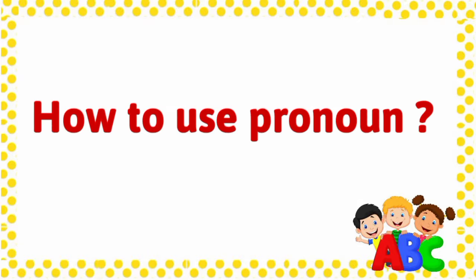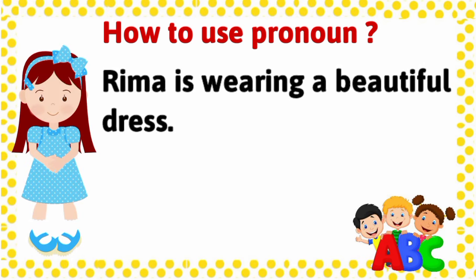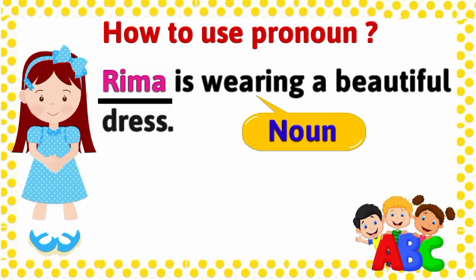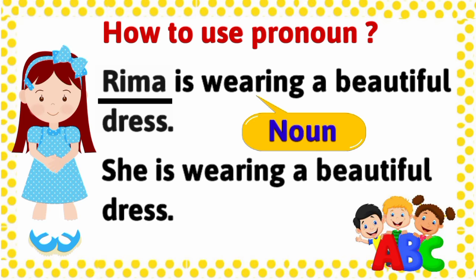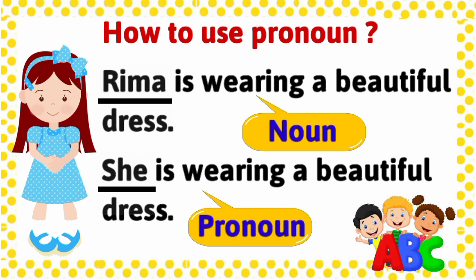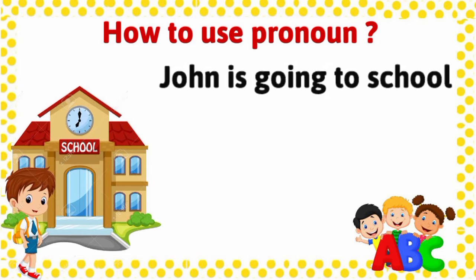Now let's understand this better with the help of a few examples. 'Rima is wearing a beautiful dress.' Here, Rima is a noun as it's the name of a girl. Now we will use a pronoun in place of the noun Rima — we say 'She is wearing a beautiful dress.' Here the word 'she' is a pronoun, as we used it in place of the noun Rima.